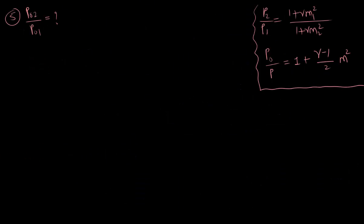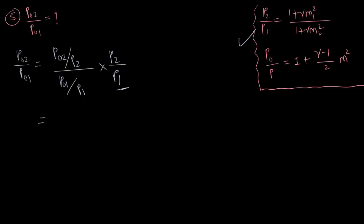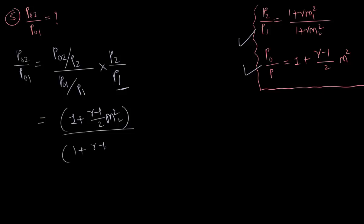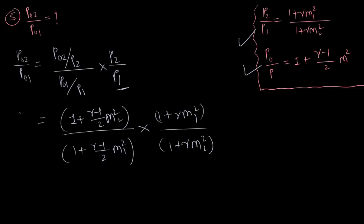Now we derive P02/P01. We write P02/P01 = (P02/P2) × (P2/P1) × (P1/P01). We know P2/P1 from the momentum equation, and the relation between stagnation and static pressure gives P02/P2 = [1 + (γ−1)/2 × M2²] and P01/P1 = [1 + (γ−1)/2 × M1²]. Substituting P2/P1 = (1 + γM1²)/(1 + γM2²), we obtain the expression for P02/P01.